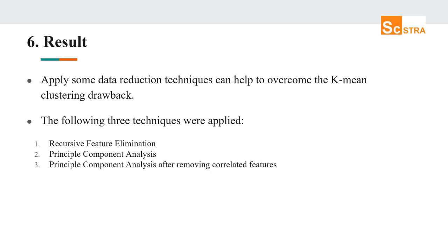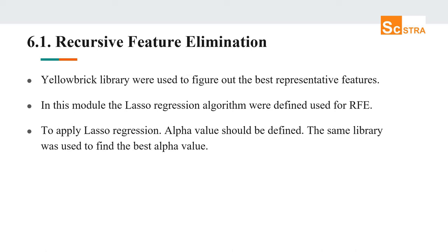I applied data reduction techniques to overcome the K-means clustering drawback. 33 land use variables were reduced for use in the K-means clustering algorithm. Three techniques were applied and the best one was selected: recursive feature elimination, principal component analysis, and principal component analysis after removing correlated features. For recursive feature elimination, the Yellowbrick library was used with the lasso regression algorithm. To apply lasso regression, the optimal alpha value must be defined using the same library.